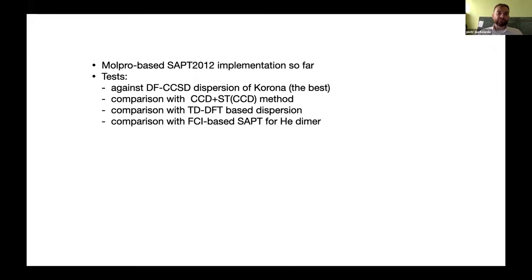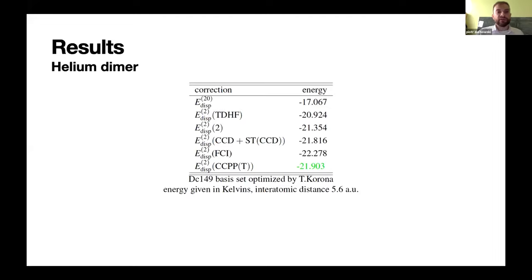And now, I would like to show some examples. So, I implemented it in Molpro-based SAPT 2012. And what are the tests? Because we test only the dispersion energy. So, what we have? We have, of course, the full-CI-based SAPT for helium dimer. So, here, we can compare it with time-dependent DFT and with the Williams method coupled cluster doubles and STCCD. And, of course, our benchmark should be, I mean, what we believe is the most accurate. What was proven was the most accurate was density-fitted coupled cluster single-double dispersion of Tatjana Korona. So, we have some results. And, yes, the helium dimer.